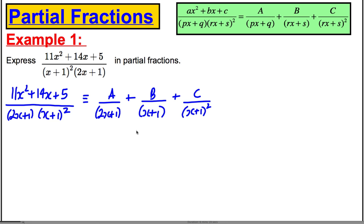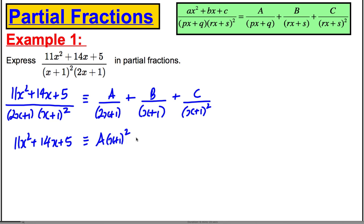This is where it's a tiny bit different to previous videos. If we made the denominators the same, we would have (2x + 1)(x + 1)² on the bottom. For the tops to be equal: A would be multiplied by (x + 1)², B would be multiplied by (x + 1)(2x + 1), and C would just need to be multiplied by (2x + 1).